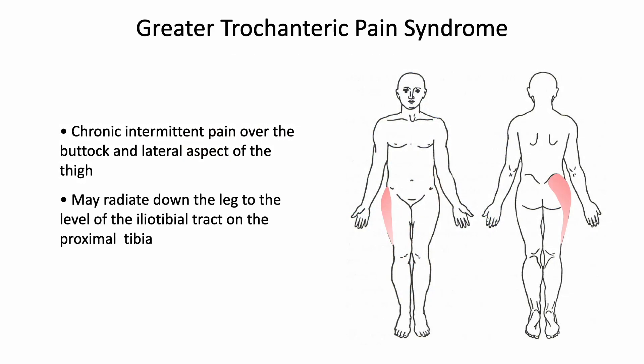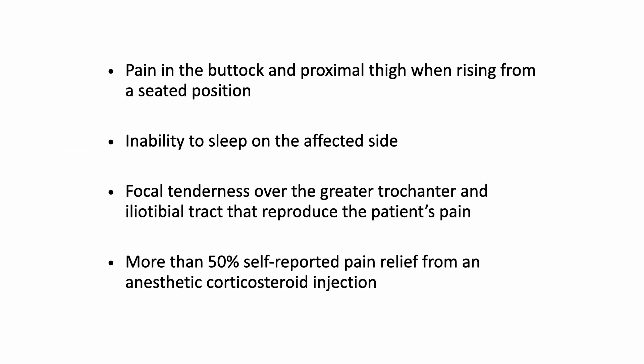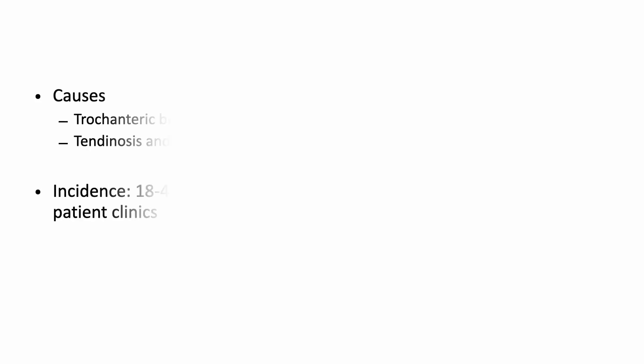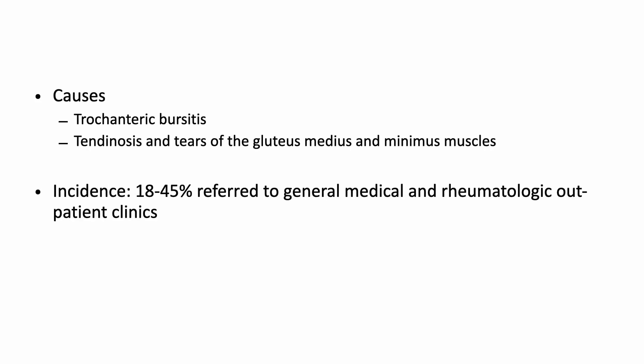Greater trochanteric pain syndrome is characterized by chronic intermittent pain of the buttock and lateral aspect of the thigh. It may radiate down the leg to the level of the iliotibial tract. Patients often feel pain when rising from the seated position and wake up in pain while lying on the affected side.